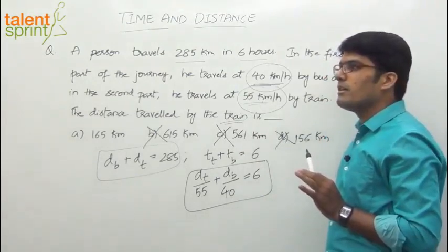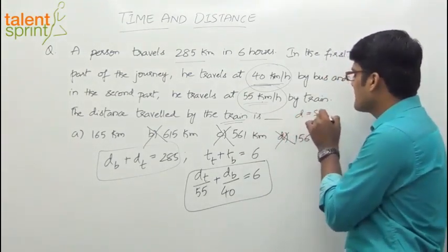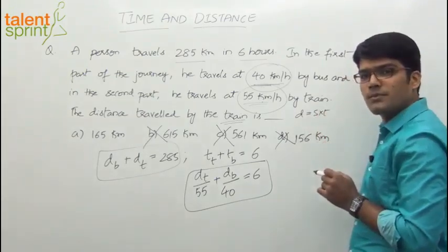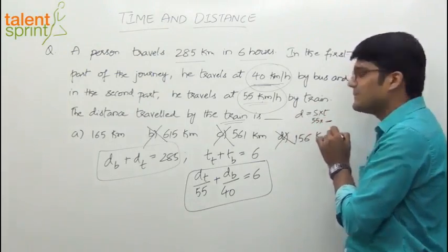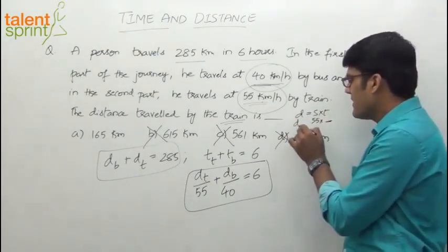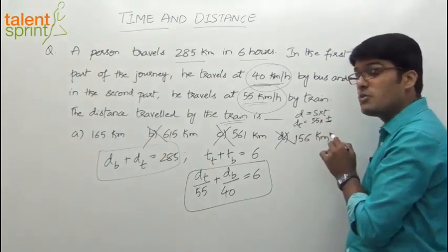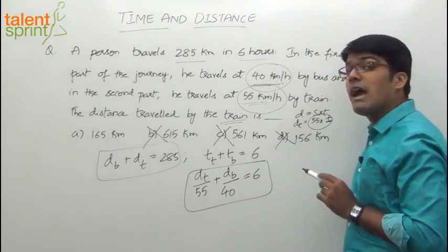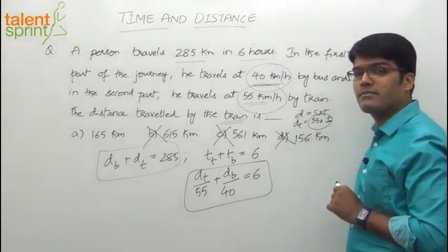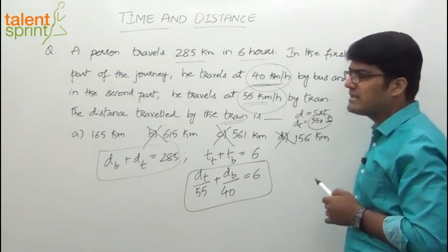The point here is, you know that distance is equal to speed into time. The speed of the train is 55 into some time T. The distance travelled by train should be 55 into some time T, which means there should be a multiple of 55. The distance travelled by train has to be a multiple of 55. Is 156 a multiple of 55? No. 165? Yes. 55 into 3 is 165.